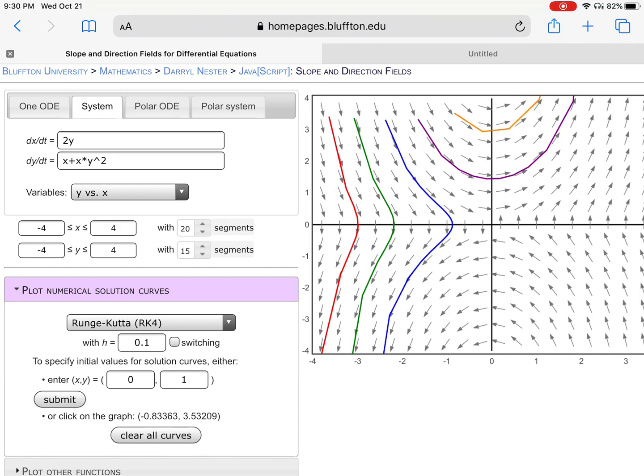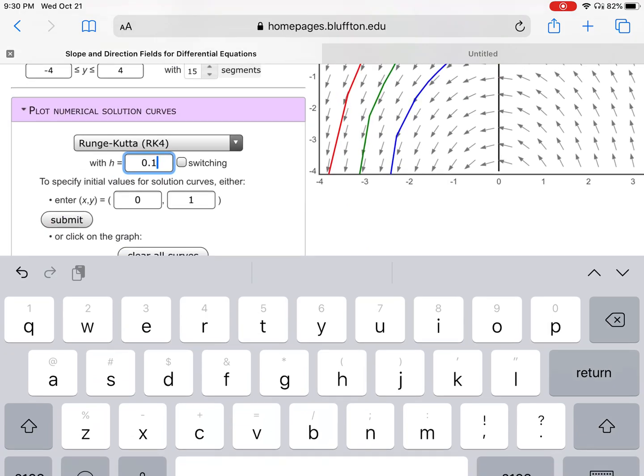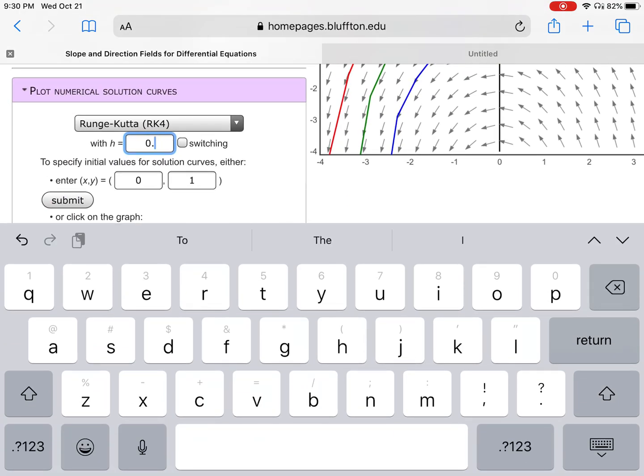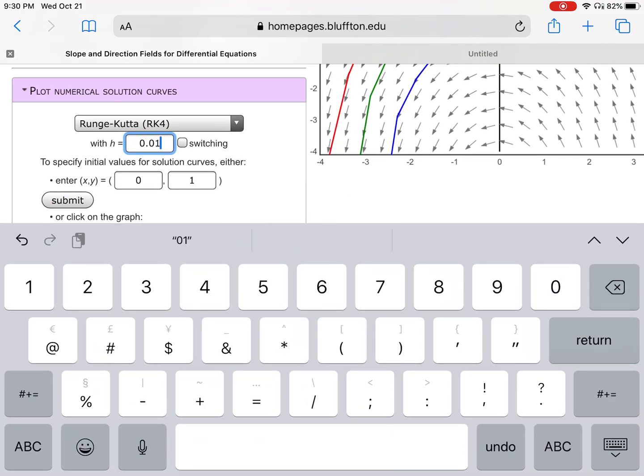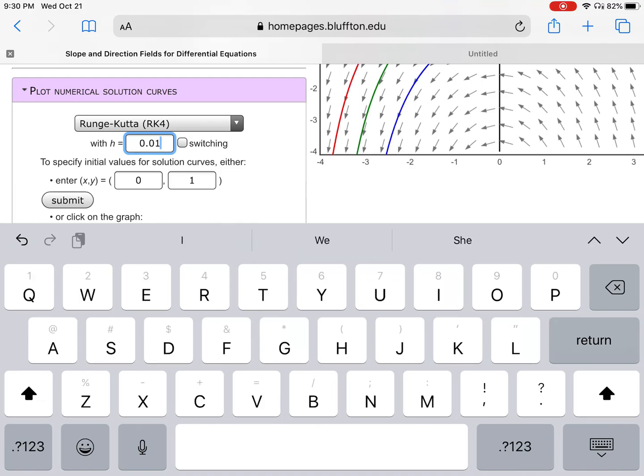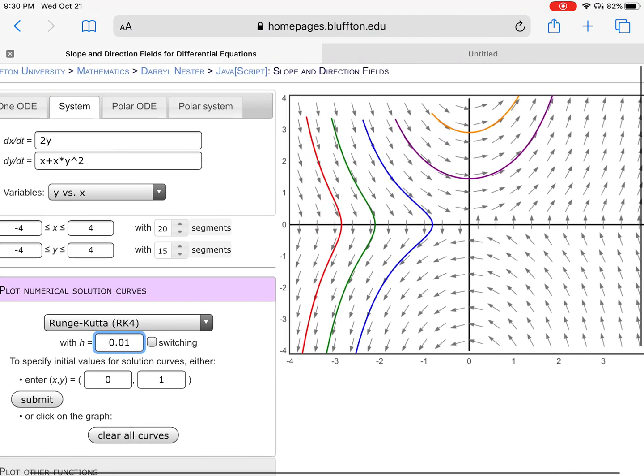You can see that one right there looks very jagged. So if I change the H value to 0.01, that fixes the jaggedness. So now I get slightly smoother curves.